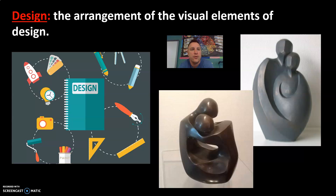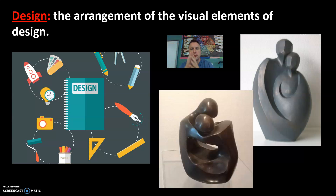So this first word here is design. Design is the arrangement of the visual elements of design. If you remember from earlier units, the elements of design refer to those seven words: line, color, value, texture, space, shape, and form. I don't expect you to remember all of those, but just to have some insight into what the elements of design mean.